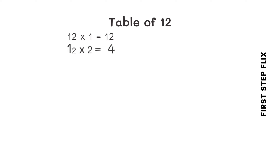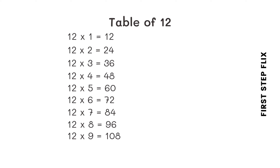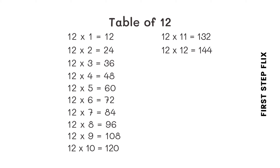12 ones are 12. 12 twos are 24. 12 threes are 36. 12 fours are 48. 12 fives are 60. 12 sixes are 72. 12 sevens are 84. 12 eights are 96. 12 nines are 108. 12 tens are 120. 12 elevens are 132. 12 twelves are 144. 12 thirteens are 156.